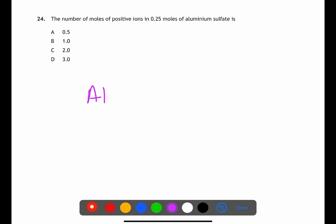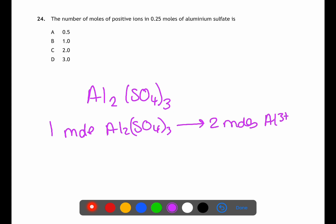In question 24 we're looking for the number of moles of positive ions in 0.25 moles of aluminium sulfate. The formula for aluminium sulfate is Al2(SO4)3. This means that for one mole of aluminium sulfate there are two moles of positive ions. If we have 0.5 moles of aluminium sulfate then there will be 0.5 moles of positive ions.